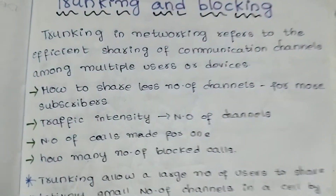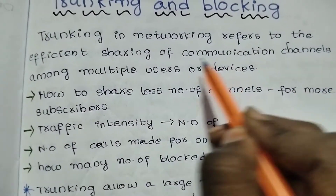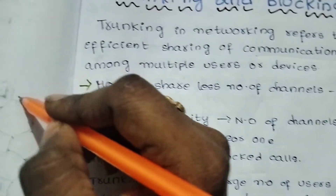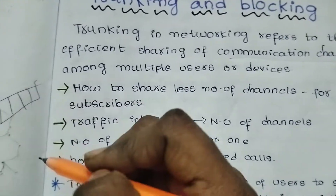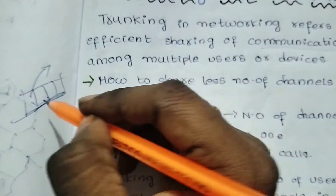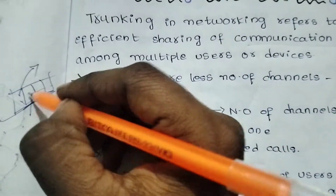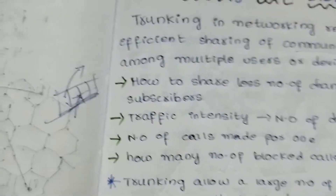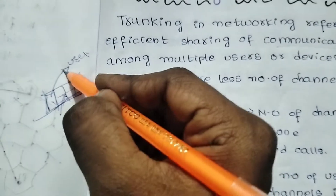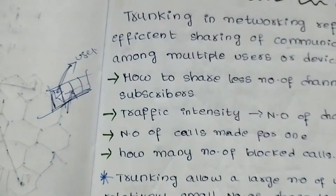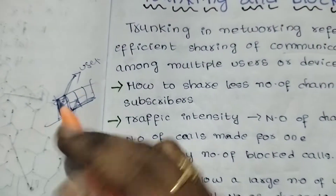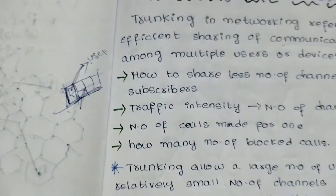In general, there are communication channels. In these communication channels, we have multiple users. There is a channel that a user can use, and when they are done, it returns to the empty pool of channels, making those channels available again.